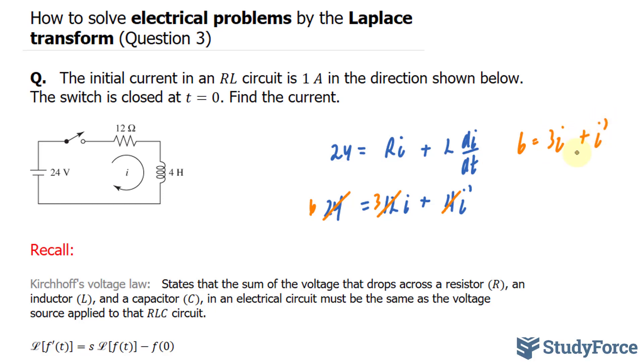Now, what I'll do is take the Laplace transform of each of these terms. So I get the transform of 6 is equal to 3 times the Laplace transform of I and the Laplace transform of I prime.